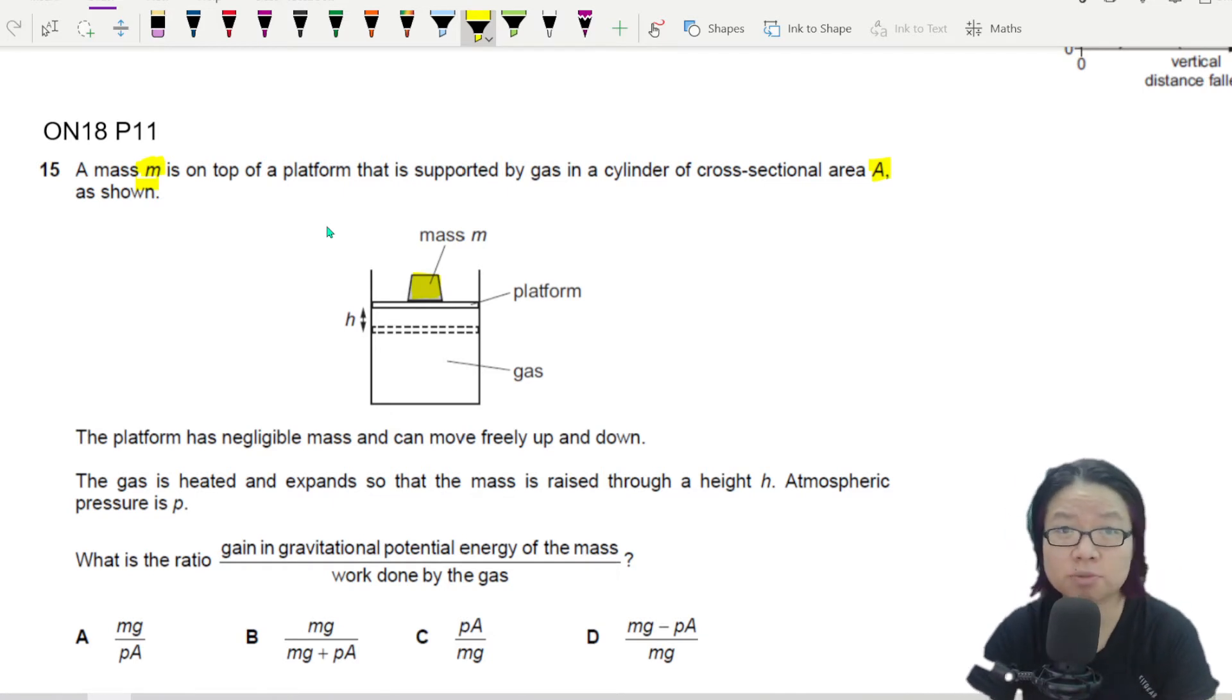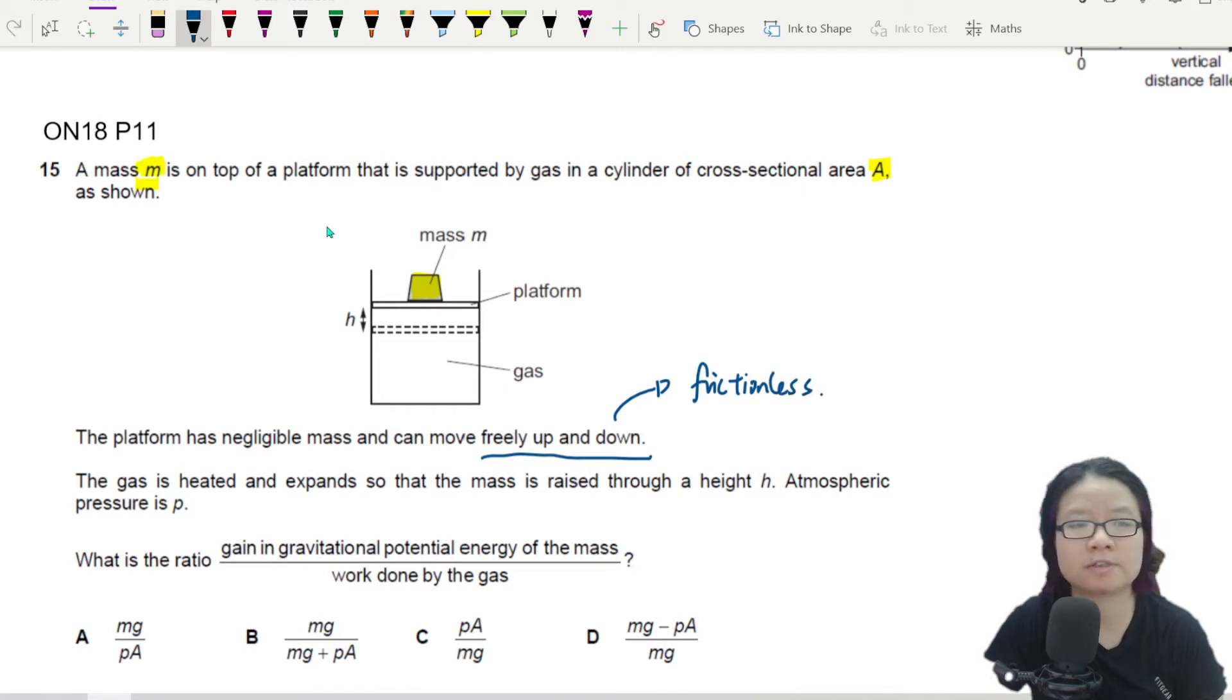The platform has negligible mass and can move freely up and down. So when you see this term freely up and down, this actually means frictionless. The piston is frictionless.